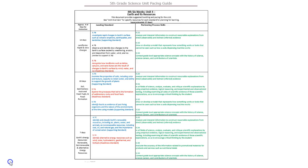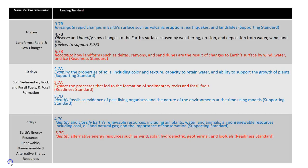Here's a screenshot of the pacing guide showing those three mini units. The first mini unit is ten days, the second is ten days, and the last one is seven days. This view is a little difficult to see in the presentation, so I'm going to take this same information and pop it onto this screen. This version shows the content standards but not the process skills so we can focus on planning tips for the three mini units.